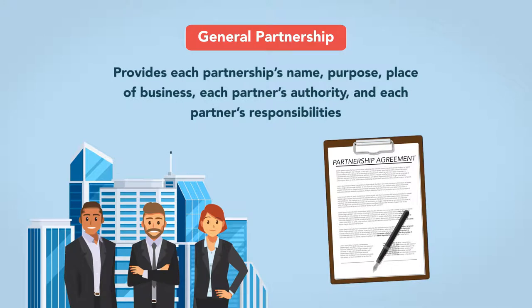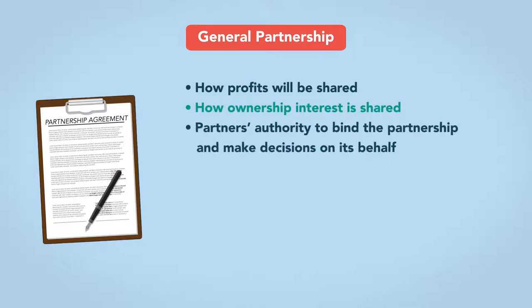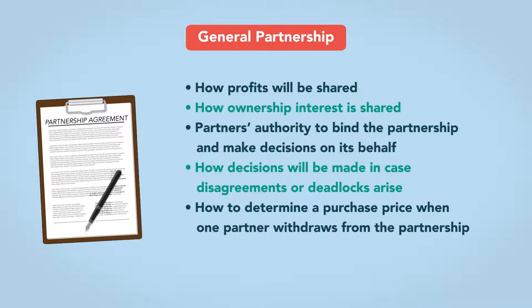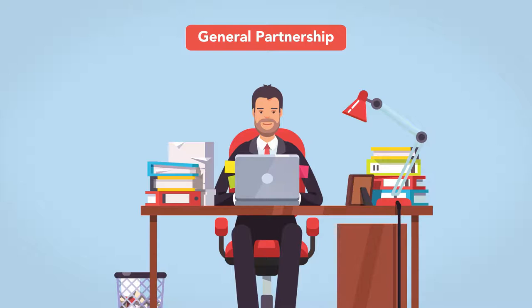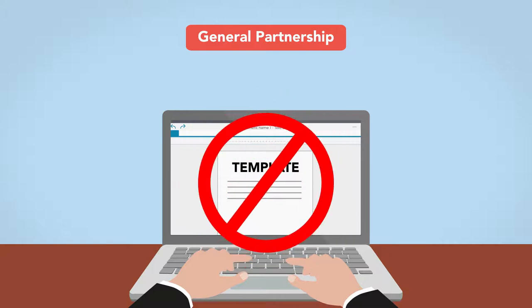The agreement provides each partnership's name, purpose, place of business, each partner's authority, and each partner's responsibilities. The agreement can also document how profits will be shared, how ownership interest is shared, partners' authority to bind the partnership and make decisions on its behalf, how decisions will be made in case disagreements or deadlocks arise, how to determine a purchase price when one partner withdraws, and how and when a withdrawing partner will be paid. Template agreement forms are readily available, and attorney assistance isn't always necessary.